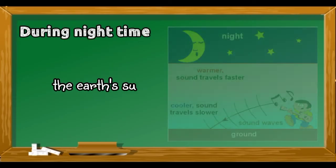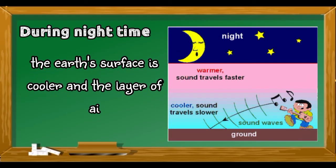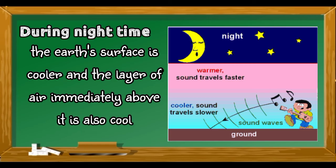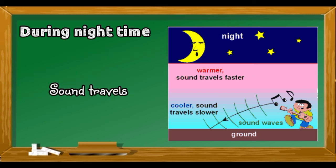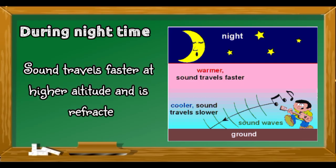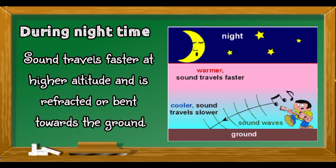Refraction also explains the travel of sound during nighttime. The Earth's surface is cooler and the layer of air immediately above it is also cooler. As a result, sound travels faster at higher altitude and is refracted or bent towards the ground.